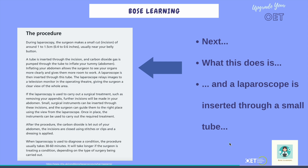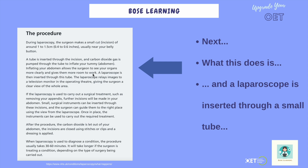So you fill that in and move on. Next: 'The tube is inserted through this cut, this incision, and carbon dioxide gas is pumped through the tube to inflate your tummy, or your abdomen.' Then you give the patient a little warning that you're going to explain what the carbon dioxide does: 'What this does is — it inflates your abdomen and this allows the surgeon to see your organs clearly.' Pause a little bit. Then: 'A laparoscope is inserted through a small tube and this relays images to a television monitor in the theatre, so the surgeon has a clear view of the whole area.'